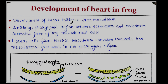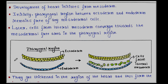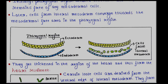Development of heart initiates from mesoderm. Initially, the pharyngeal region between ectoderm and endoderm remains free of any mesodermal cells. Later, cells from lateral mesoderm converge towards the mesodermal-free area in the pharyngeal region. They get thickened in the region of the heart and thus form the heart rudiment.